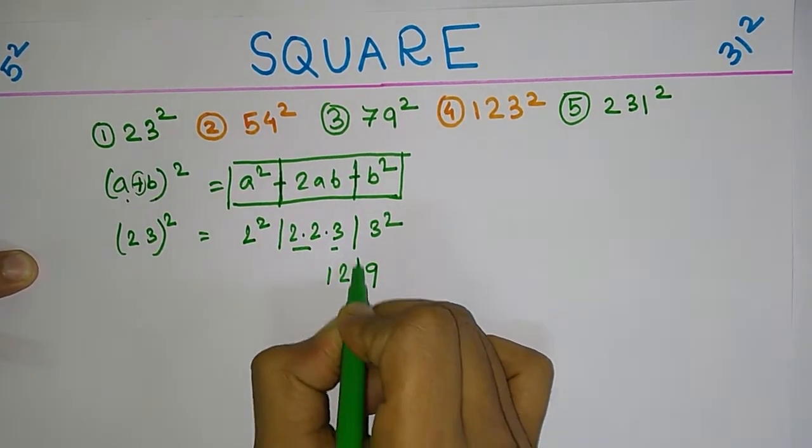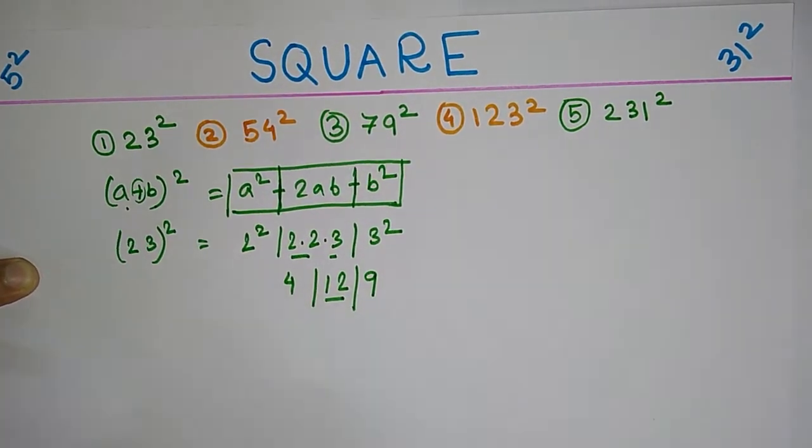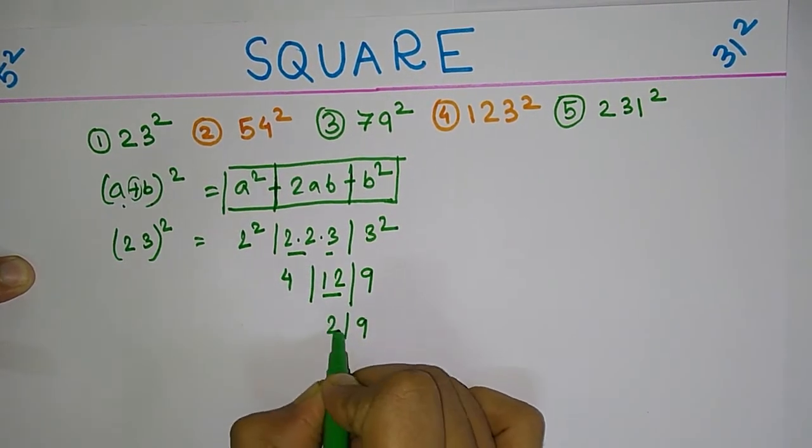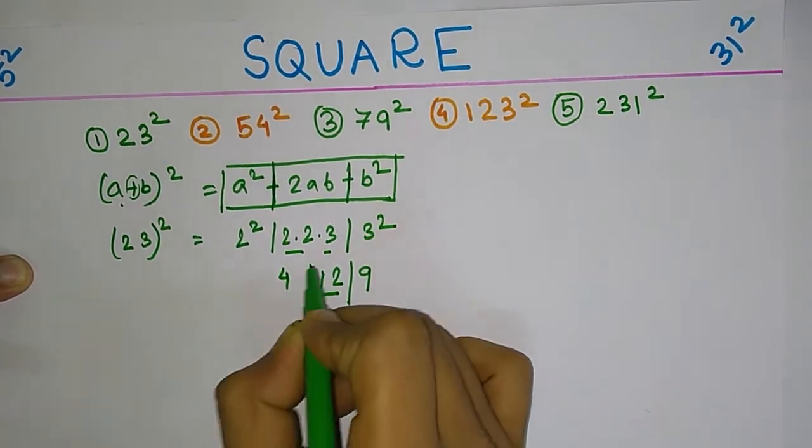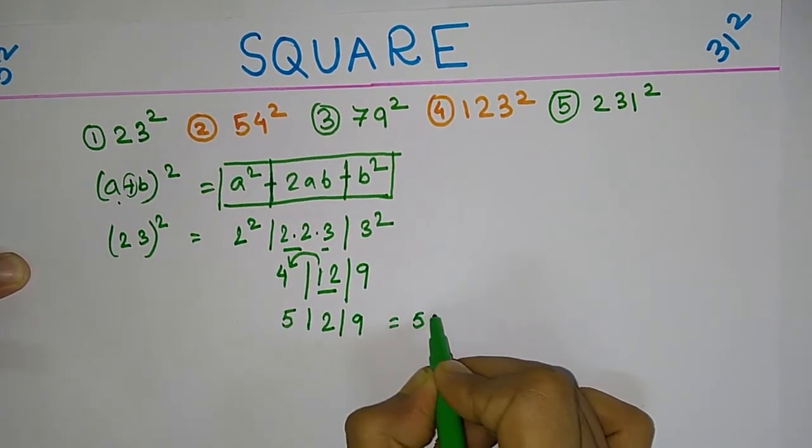Fine. Now since it is a two digit, so we are going to carry it over, right? So this one will be carried further to give 5. So that's your answer. 23 square will be 529.